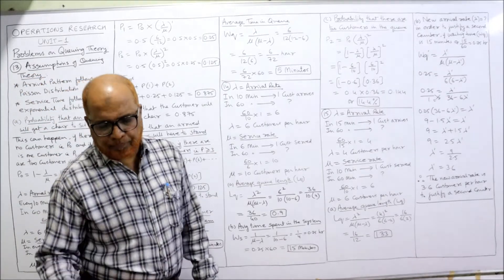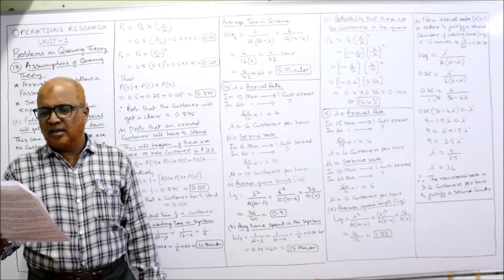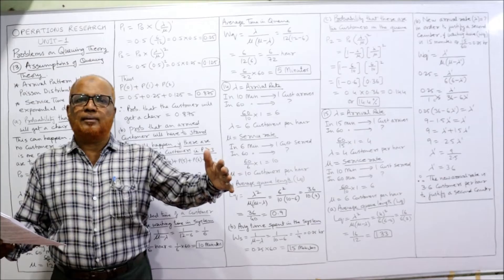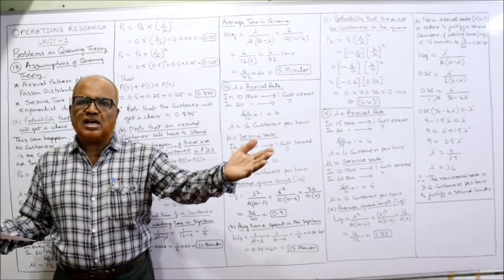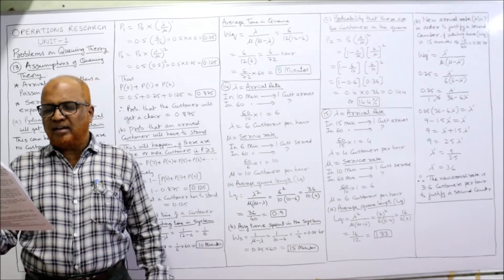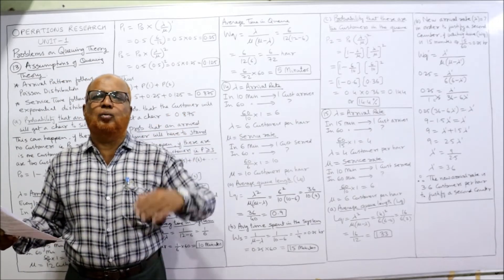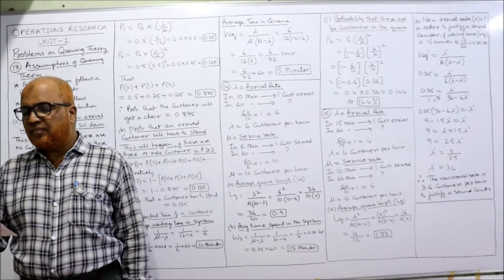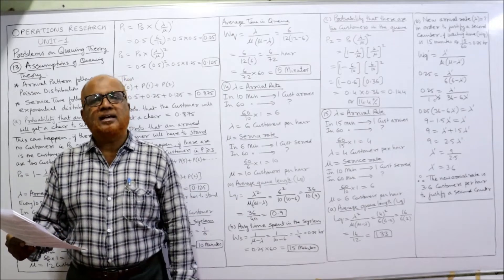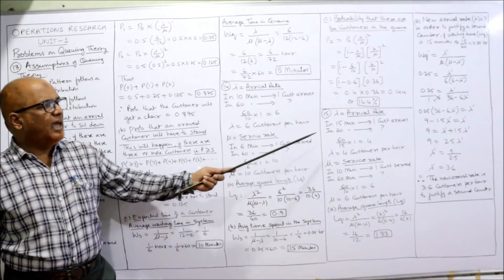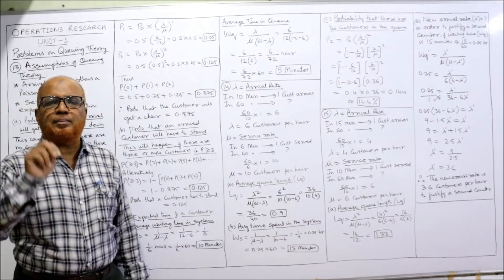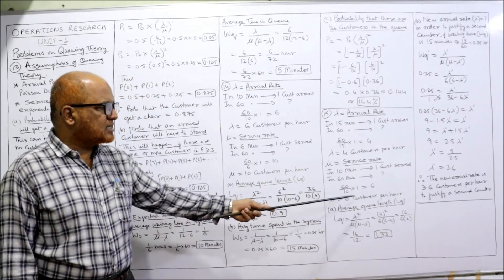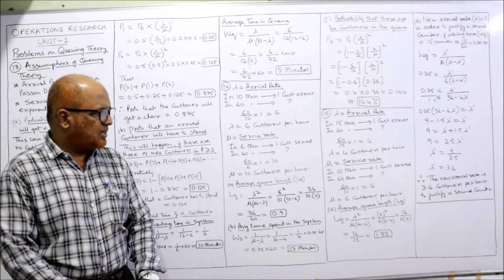Problem 15: in a bank, one customer arrives every 15 minutes for cashing a check. The single channel payment counter takes 10 minutes to serve a customer on average. State suitable assumptions: arrivals follow Poisson distribution; service follows exponential distribution. Lambda = 60/15 = 4 customers per hour. Mu = 60/10 = 6 customers per hour.